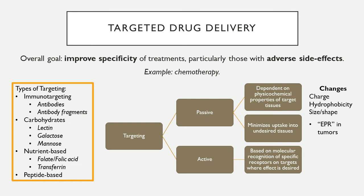Targeted drug delivery systems have been a hot topic for the past 10 to 20 years. The goal is to improve the specificity of treatment — to hone in the drug so it acts exactly on the desired site. A classic concept is the 'magic bullet' or 'silver bullet' effect: a chemotherapeutic drug that is toxic to all cells but, if delivered via a convenient oral dosage form, can be absorbed and hone into an exact target like a tumor, acting only on cancerous cells.